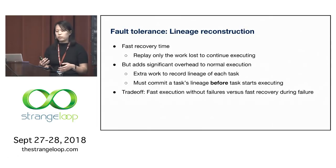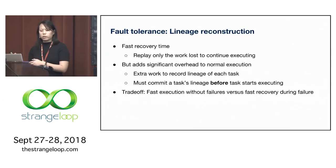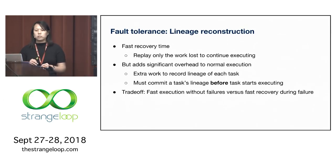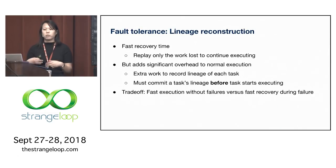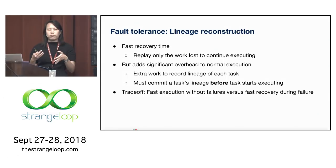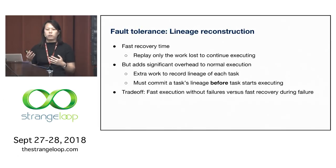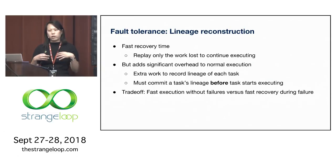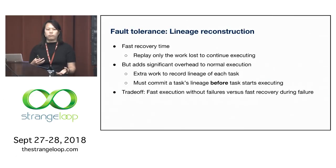An alternative technique at the opposite end of this tradeoff is global checkpointing, where you don't log any lineage during execution—instead you just take a global checkpoint across all workers in the system, adding minimal overhead during execution. On the other hand, once there's a failure, even of a single node, you have to roll back the entire system to the most recent global checkpoint, which on a very large cluster with a long-running job can end up wasting a lot of significant work.